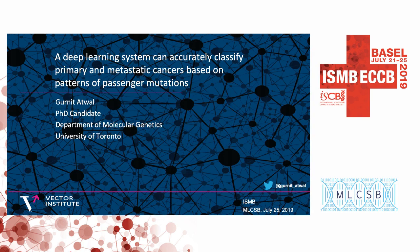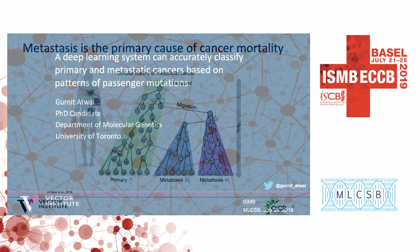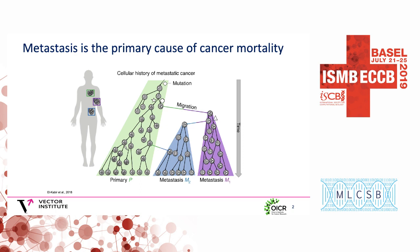Thank you for the introduction. I'm going to talk about using mutations to identify cancer type. Cancer is a process of somatic evolution, and one of the most important events in the evolutionary history of a tumor is metastasis. When a tumor metastasizes, some cells from the primary tumor gain the ability to migrate to and colonize another organ. Metastasis is the primary cause of cancer-related mortality and presents a major challenge in the clinic. Metastases contain ancestral information about the primary tumor in the form of mutations found in the cells of the primary tumor that give rise to the metastasis.